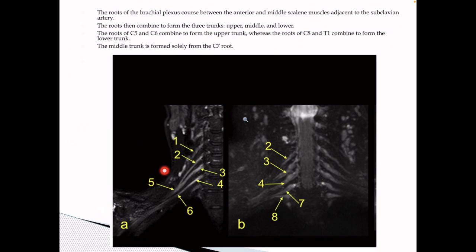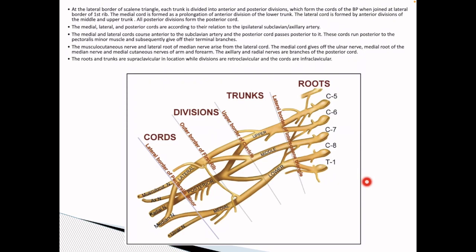The C5 and C6 combine to form the upper trunk. C7 continues as the middle trunk. C8 and T1 join to form the lower trunk. At the lateral border of the scalene triangle, each trunk is divided into the anterior and posterior division. The medial cord is formed as the prolongation of the anterior division of the lower trunk, and the lateral cord is formed by the anterior division of the middle and upper trunk. All of the posterior divisions form the posterior cord. The medial and lateral cords course anterior to the subclavian artery and the posterior cord passes posterior to it.